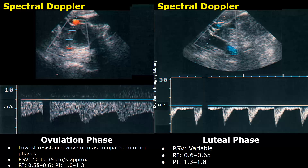As we enter the luteal phase, the resistance starts to increase. As the luteal phase progresses, the resistance continues to increase. We may find sharp peaks in the waveform. The PSV can be variable in this phase, and the value of the resistive index is increasing.